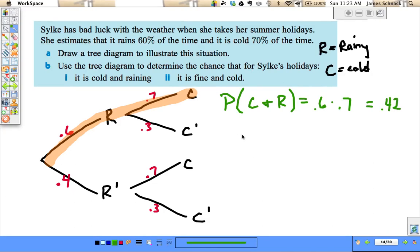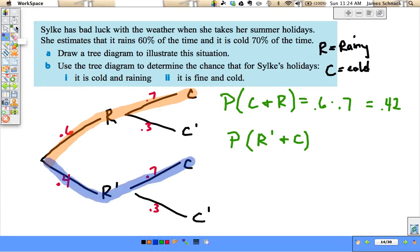Part two, it's fine and it's cold. So by fine, I think we should probably say that that means it's not rainy but it's still cold. So not rainy and cold, that's going to be that branch. 0.4 times 0.7, 28% of the time.